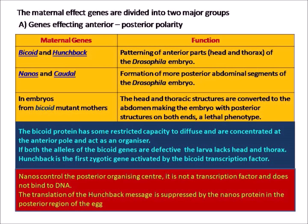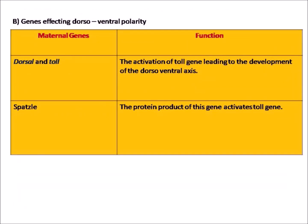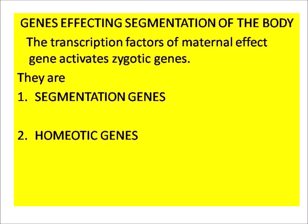In embryos from bicoid mutant mothers, the head and thoracic structures are converted to abdomen, making the embryo with posterior structures on both ends — a lethal phenotype. The bicoid protein has restricted capacity to diffuse and is concentrated at the anterior pole, acting as an organizer. If both alleles of the bicoid gene are defective, the larva lacks head and thorax. Hunchback is the first zygotic gene activated by the bicoid transcription factor. Nanos controls the posterior organizing center; it is not a transcription factor and does not bind to DNA. The translation of the hunchback message is suppressed by the nanos protein in the posterior region of the egg.